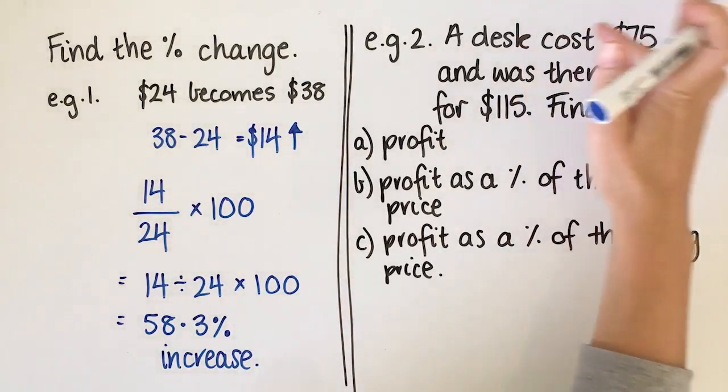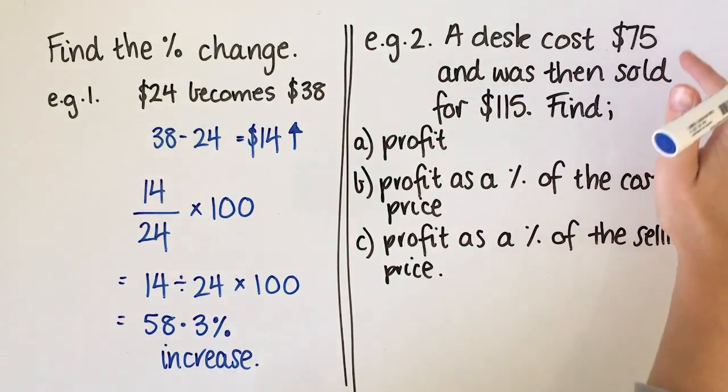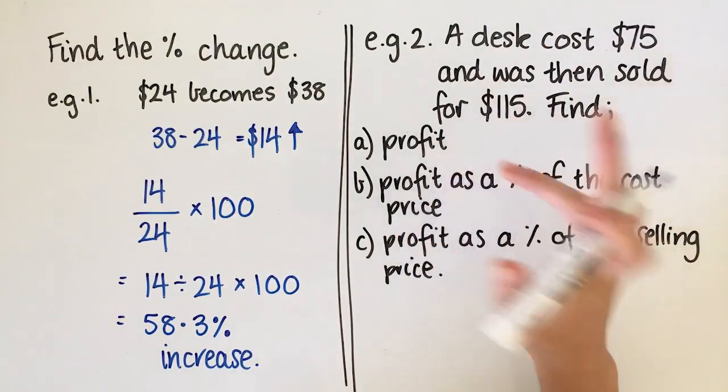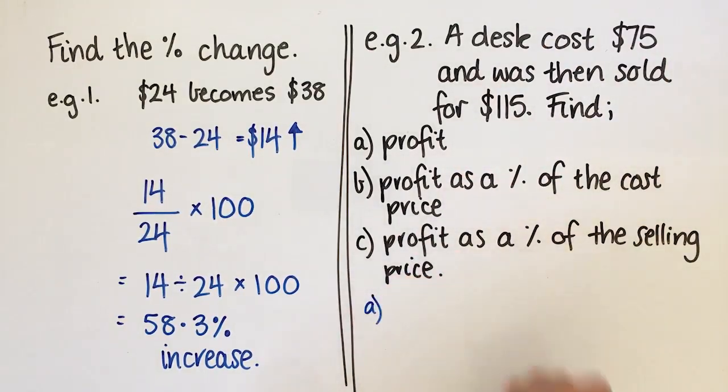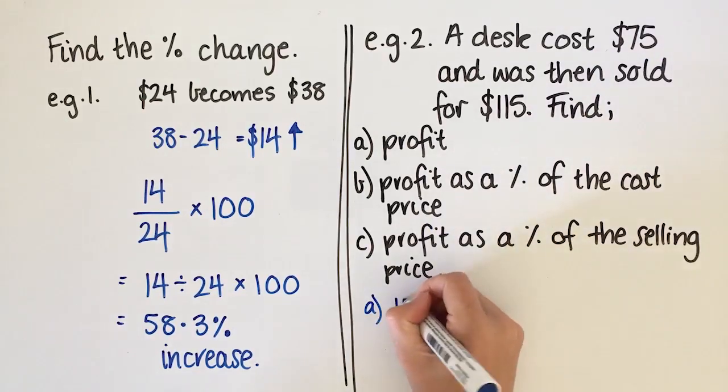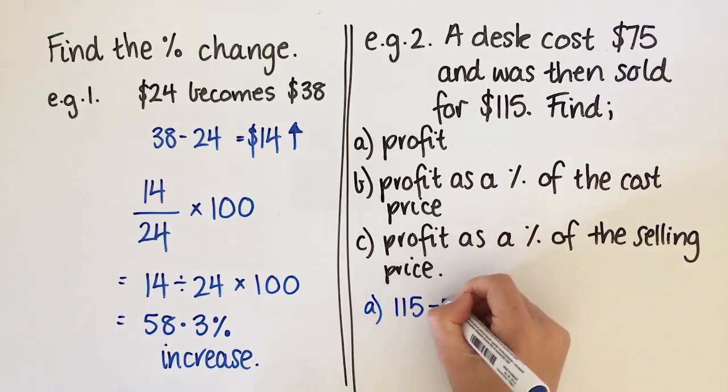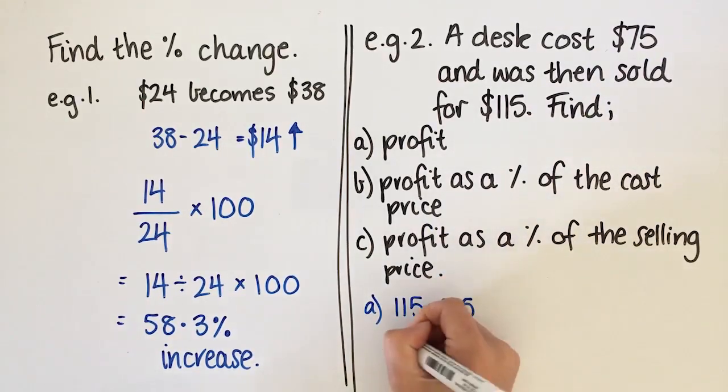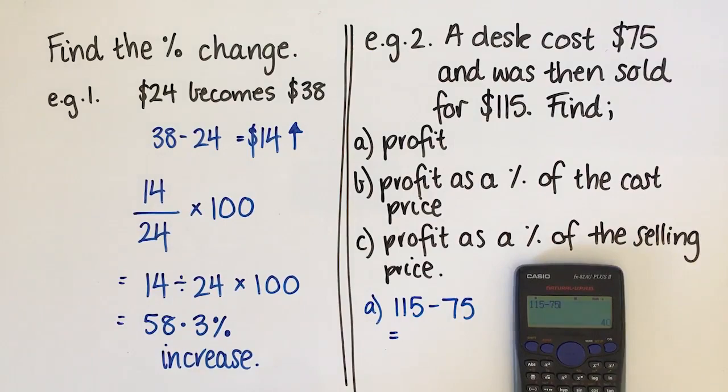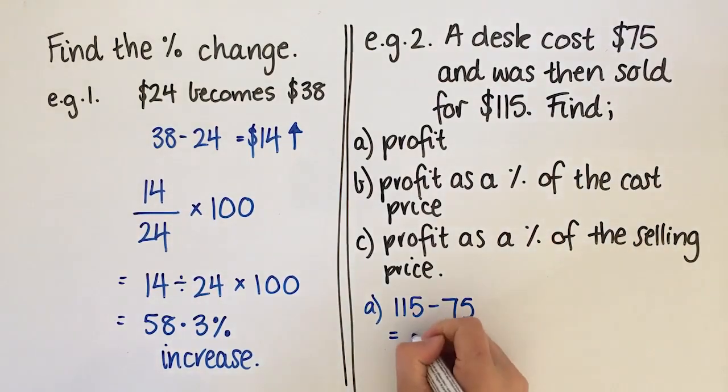For this second example, a desk costs $75 and then it was sold later for $115. Find the profit. The first step to find the profit is what it's sold for take away what you bought it for. So it's going to be 115 minus 75. If you don't know what that is in the top of your head, you can use a calculator. So the person who bought and sold this, they've made a profit of $40.